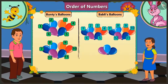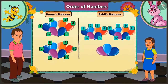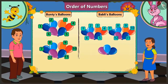Bunty is left with no more balloons, but Bubbly still has 3 balloons left with her. So we can say that Bubbly has 3 more balloons than Bunty — that is, she has 15 balloons with her.